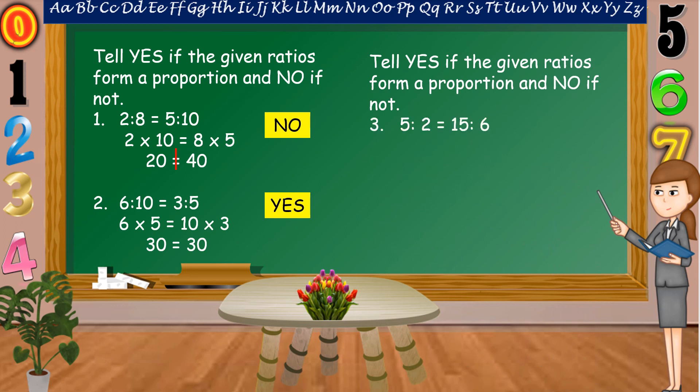Next number, 5 is to 2 is equal to 15 is to 6. What is our answer? Yes or no? Alright, it is yes. Yes, 5 times 6 is equal to 30 as 2 times 15 is equal to 30 also. Thus, 5 is to 2 and 15 is to 6 are proportion.